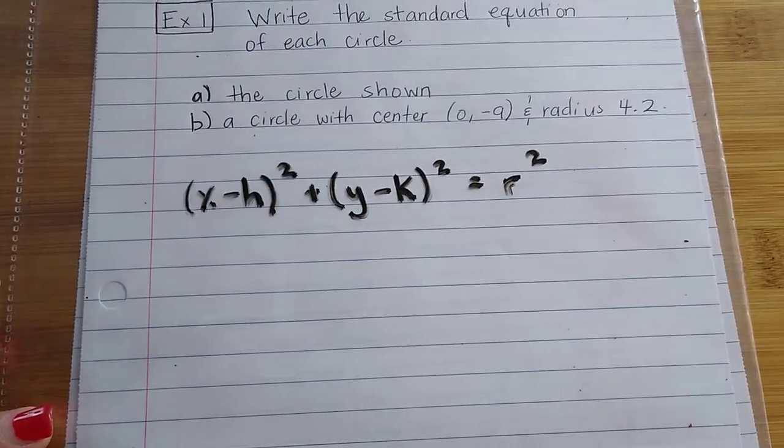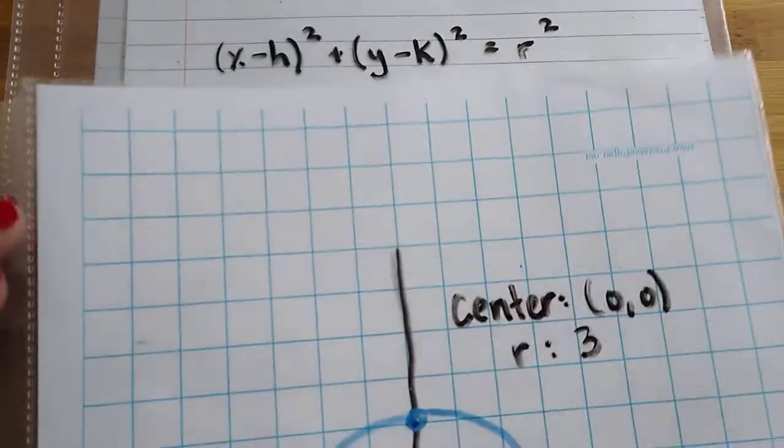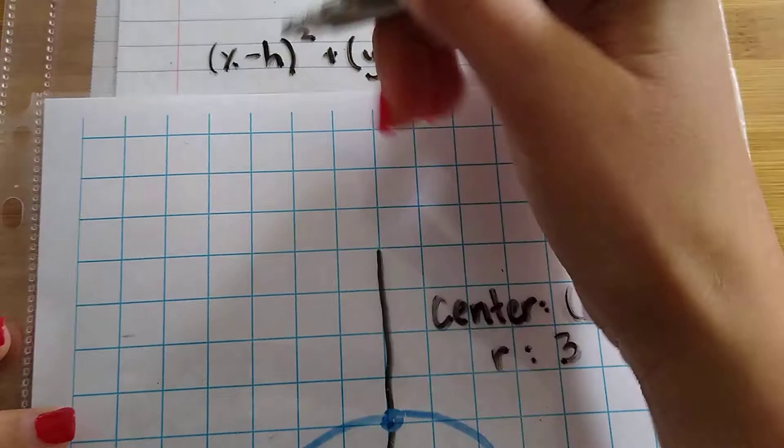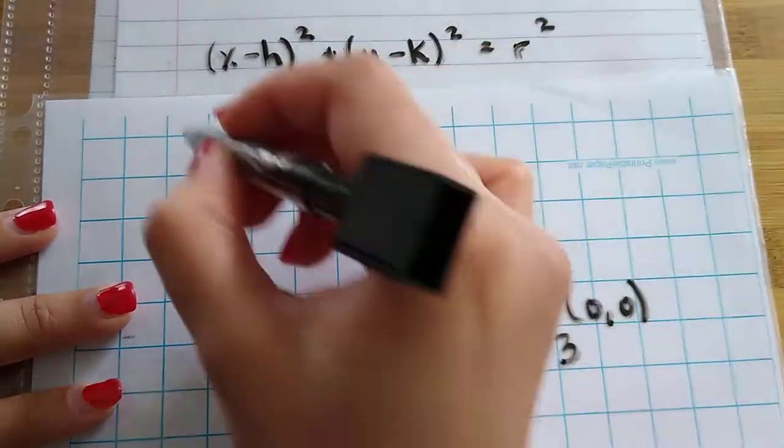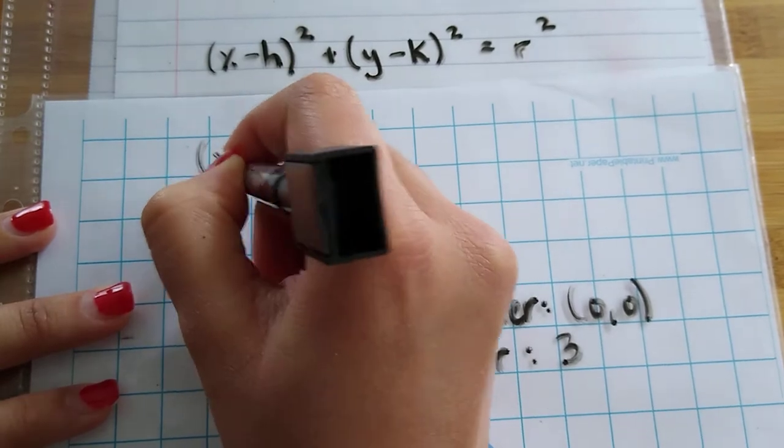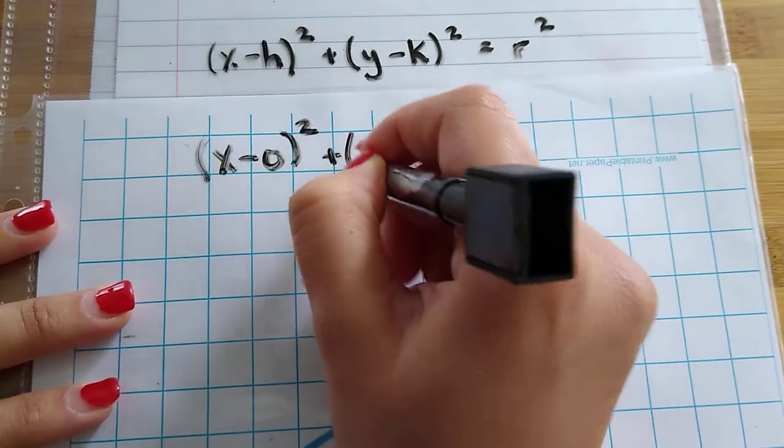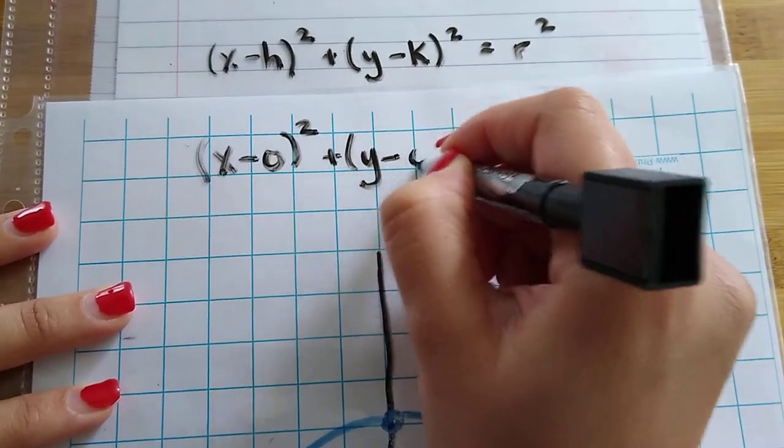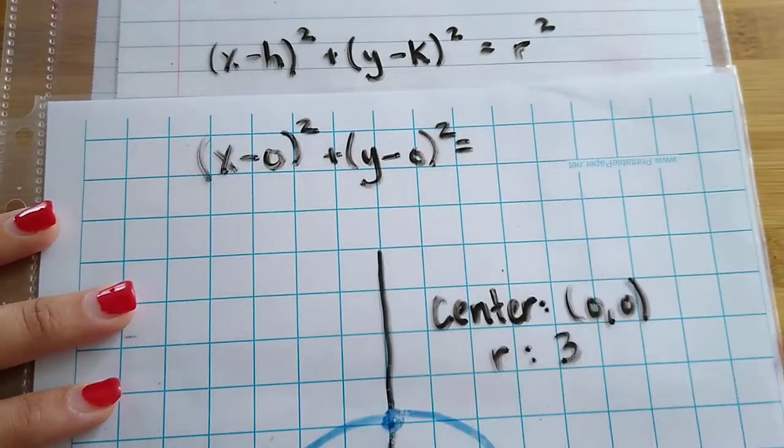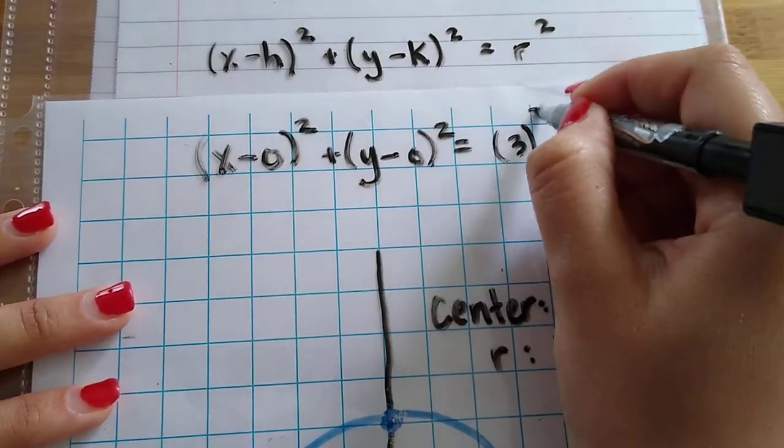We found out that the center is (0, 0). So here, we're going to write (x - 0)² + (y - 0)² = 3².